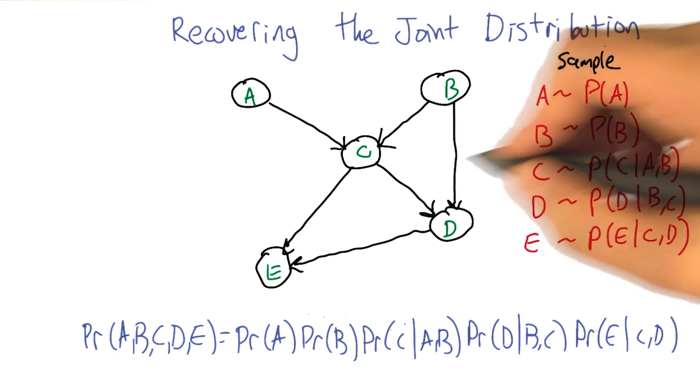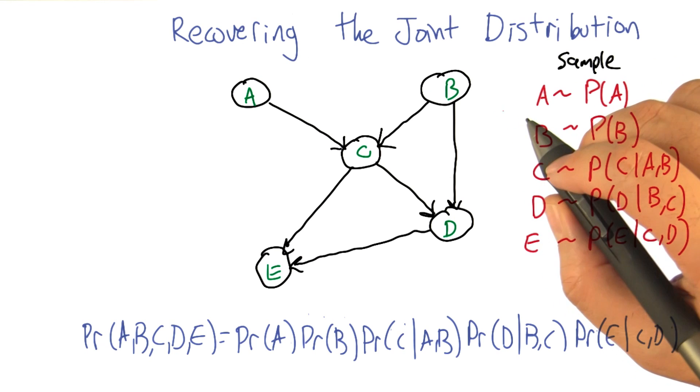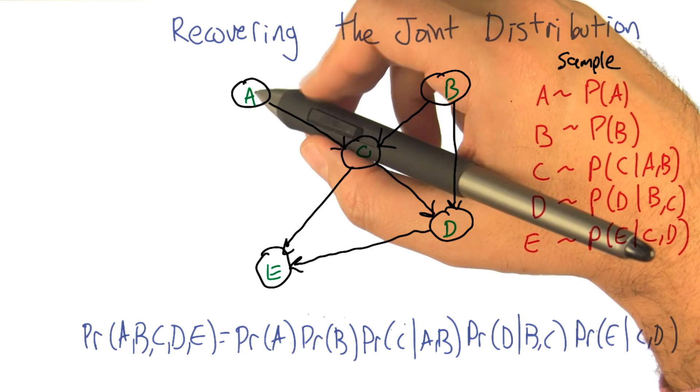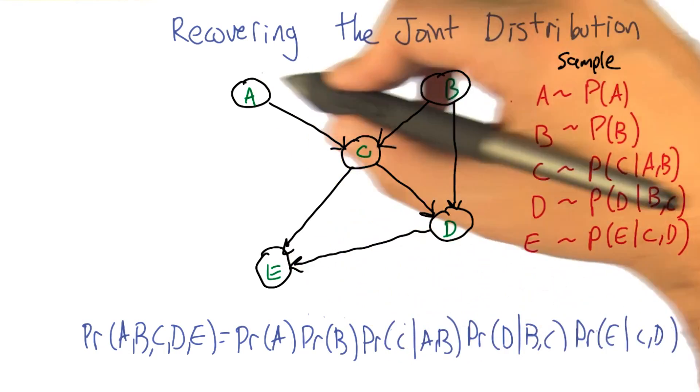Another important thing you can do with this representation is recover the joint distribution. Remember a couple slides ago we looked at how to go from the discrete joint distribution to specifying the probabilities, the conditional probability tables, at each of these nodes.